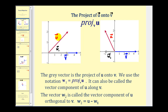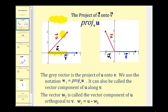Looking at the graph here on the left, we're projecting the red vector u onto the blue vector v, and the projection is the gray vector, which we call vector w sub one. One way to think of a projection of one vector onto another is if we were to have a light up here shining down on the red vector — the projection of u onto v would be the shadow that this light produces.